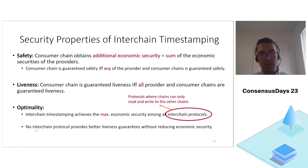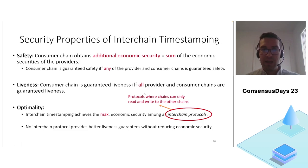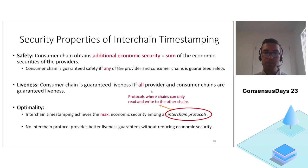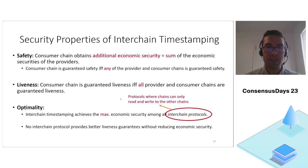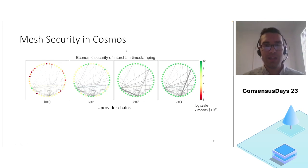We also state that no interchain protocol provides better liveness guarantees without reducing economic security. So we must accept this liveness trade-off: liveness is guaranteed if and only if all provider and consumer chains are guaranteed liveness. This point becomes less important if the consumer chain already has the worst liveness guarantees amongst its providers, because it won't be degrading liveness through this process.